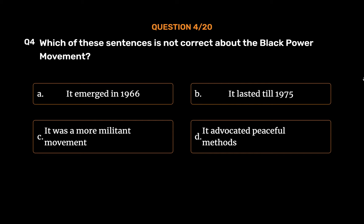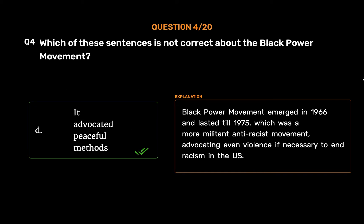The correct answer is Option D: It advocated peaceful methods. The Black Power Movement emerged in 1966 and lasted till 1975. It was a more militant anti-racist movement, advocating even violence if necessary to end racism in the US.